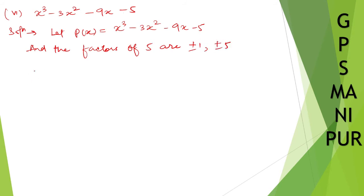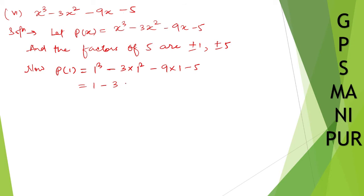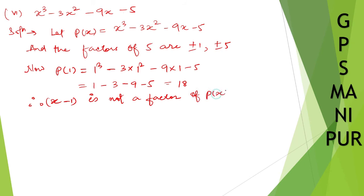p(1) equals 1 cubed minus 3 into 1 squared minus 9 into 1 minus 5. That is 1 minus 3 minus 9 minus 5, which gives minus 16. Therefore, x minus 1 is not a factor of p(x).